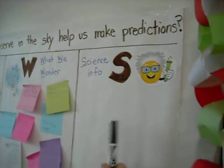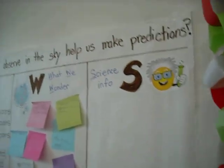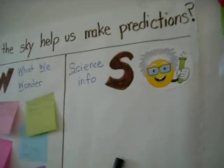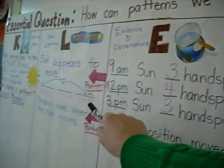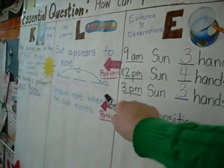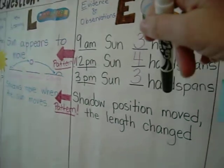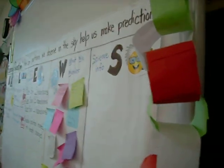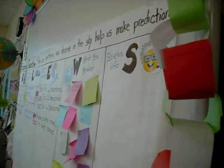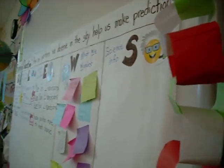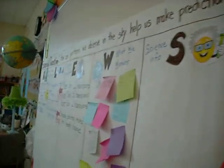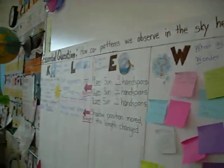Who can now explain the science? What is it that makes the sun appear to move? Because the sun isn't actually moving — it appears to move, or looks like it's moving. What's the science behind that? Why does the sun look like it moves? Why do we have day and night?